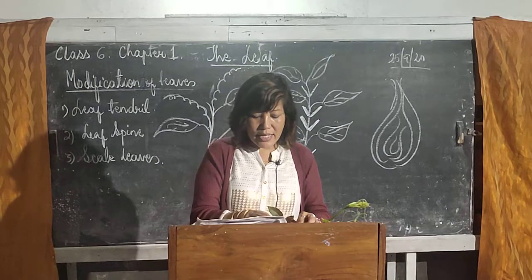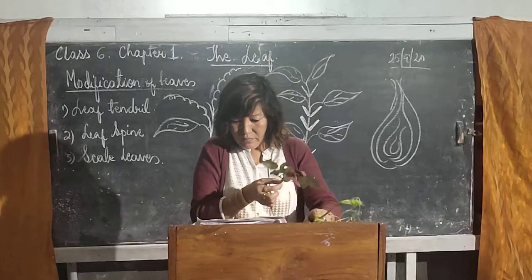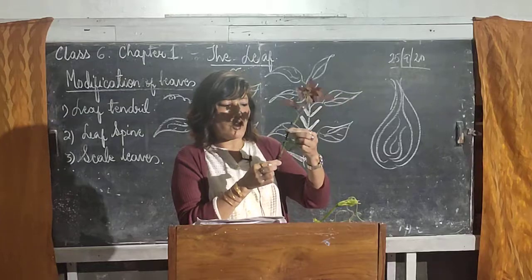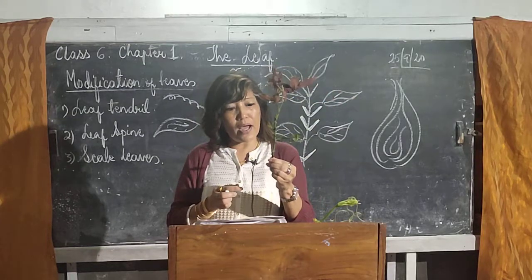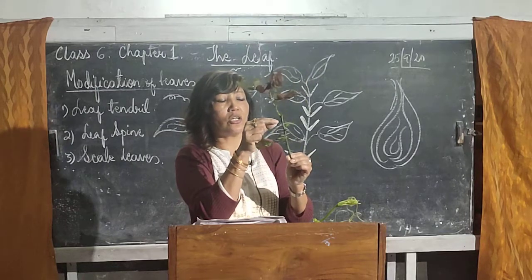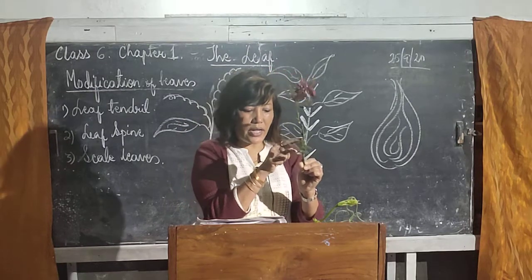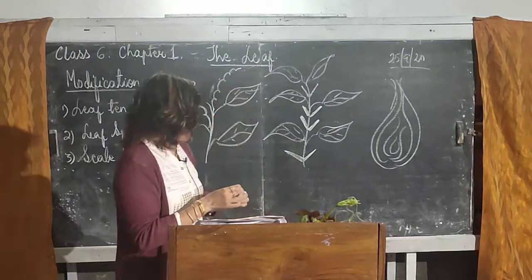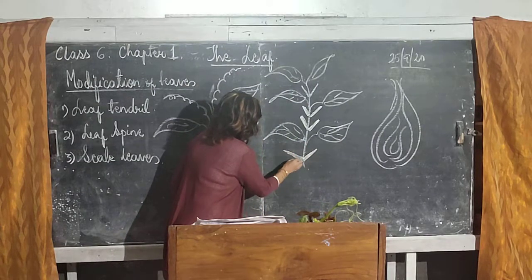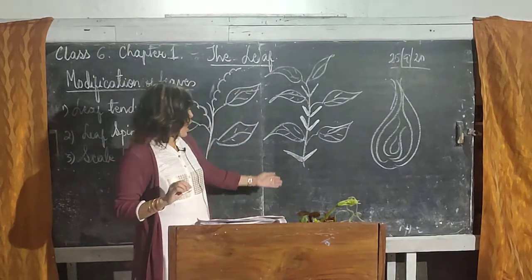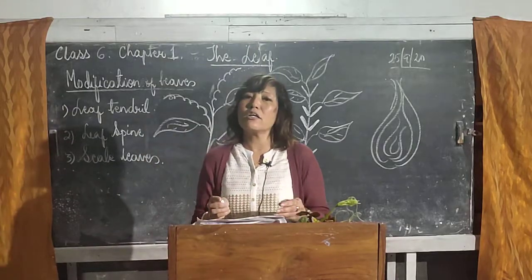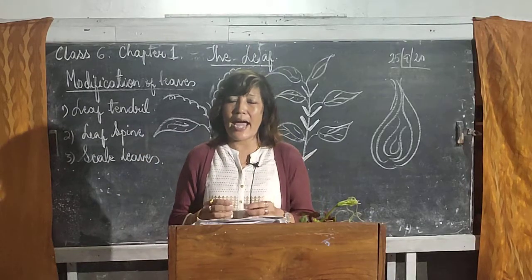These spines act as a defensive structure. Here this is a rose plant and you can see that pointed sharp structure which is called spine. The spines act as a defensive structure and they specially protect the plant from grazing animals.